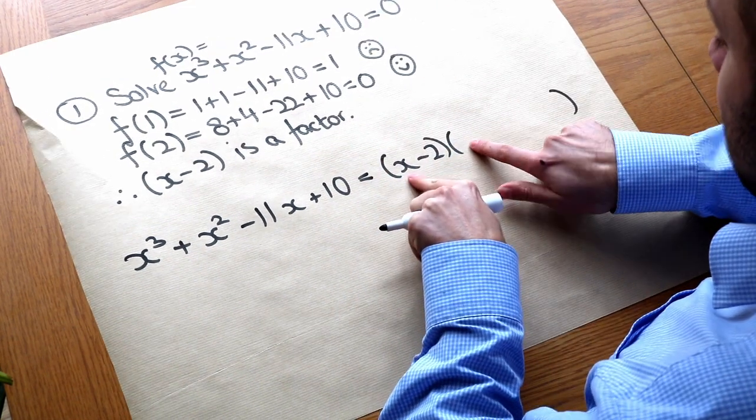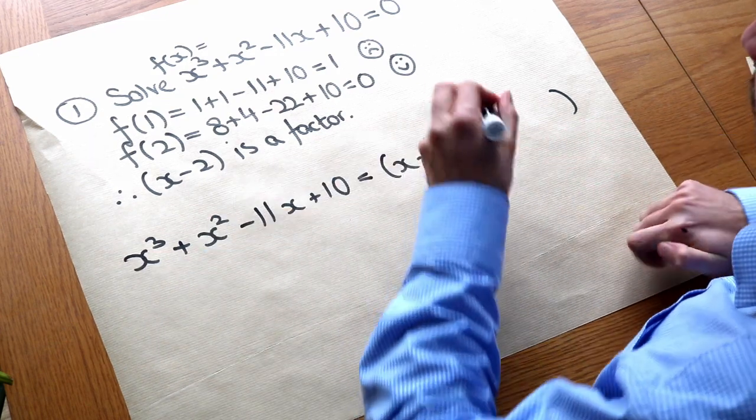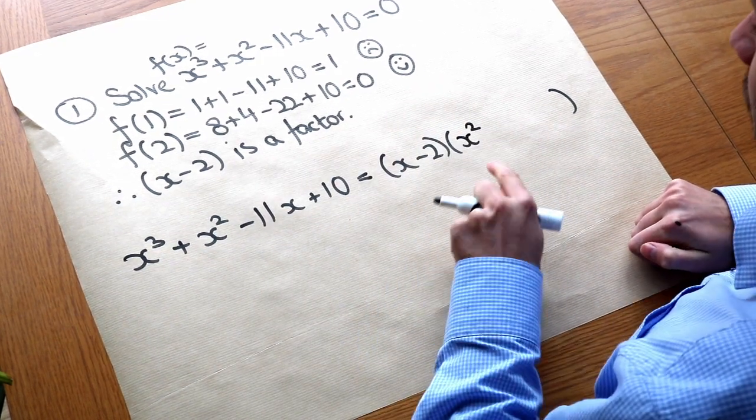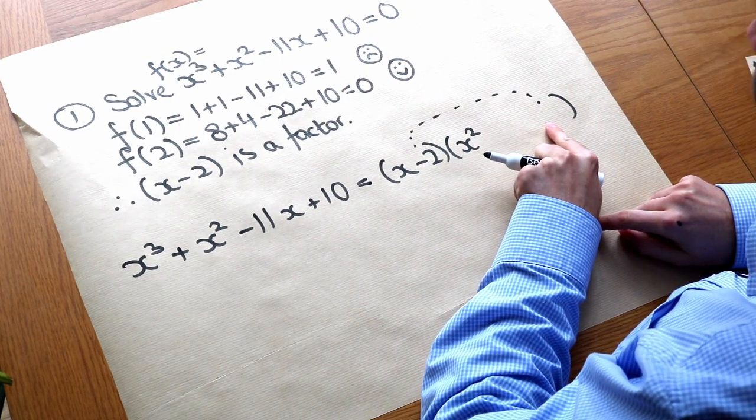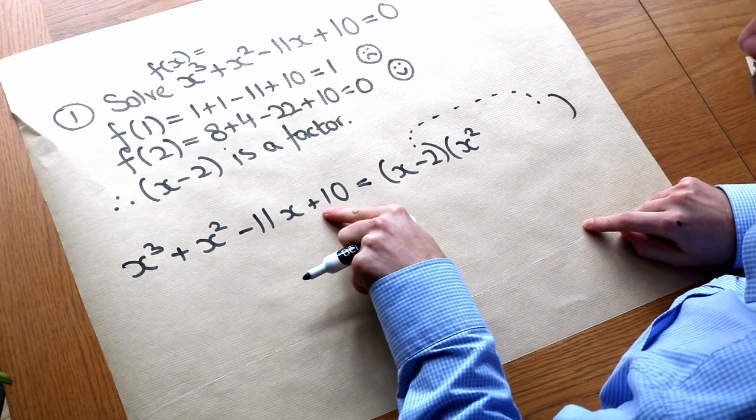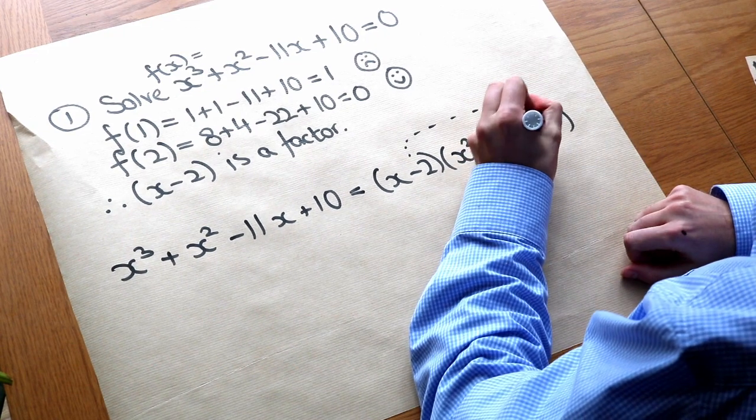Now let's think about the expansion. x times what is going to give that x cubed. Well it's just x squared isn't it. Now to get the constant term it would be that minus two times whatever this constant is here. And that would be the only constant term. So to get plus ten this is going to have to be minus five.